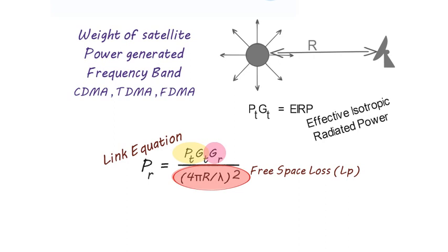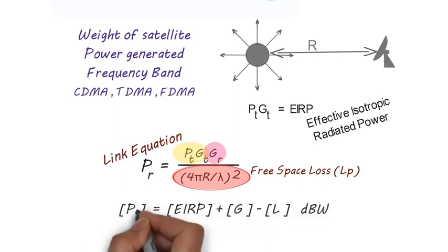So in decibel unit we can write received power PR equal to EIRP plus GR minus LB decibel watt. This equation is for ideal case.